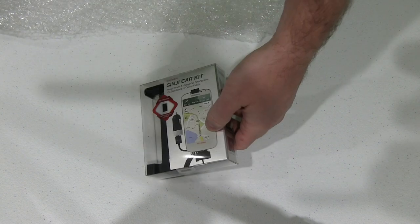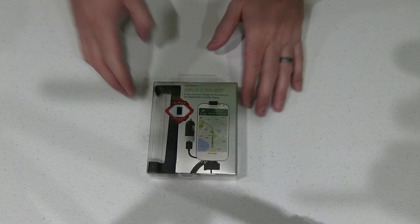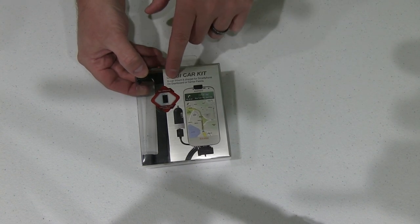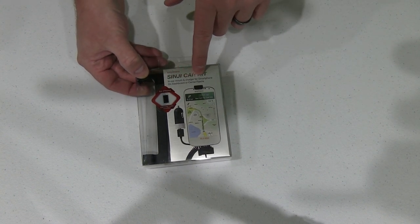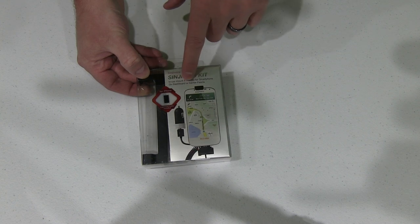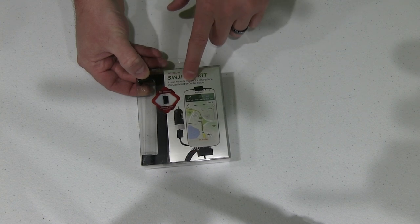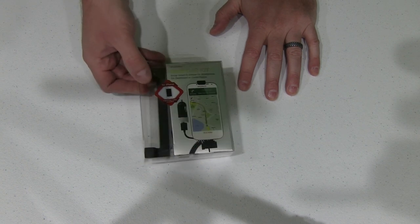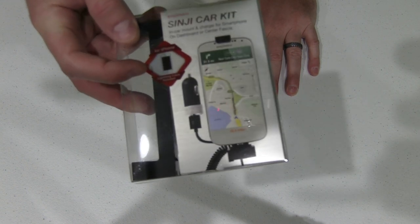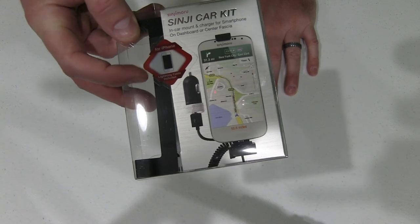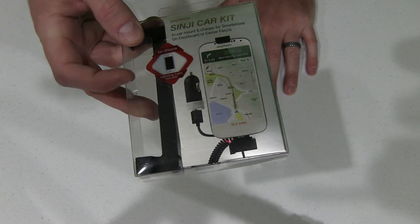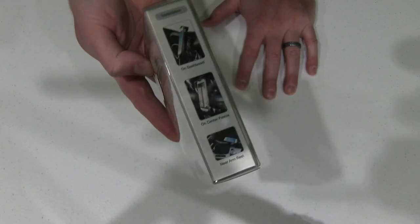Now this is just an awesome looking package here. You can see it says Sinji car kit, in-car mount, and charger for smartphone on dashboard or center fascia. It says for iPhone. Something that's really important says lightning cable included. So this comes with the lightning cable so you don't have to buy another one or share the lightning cable you already have.